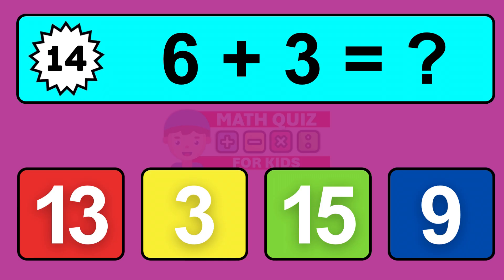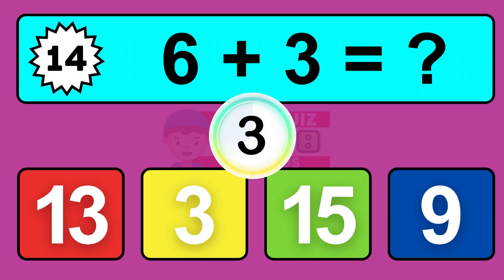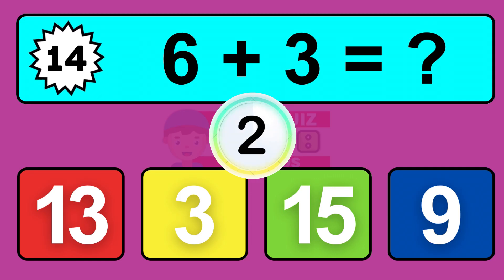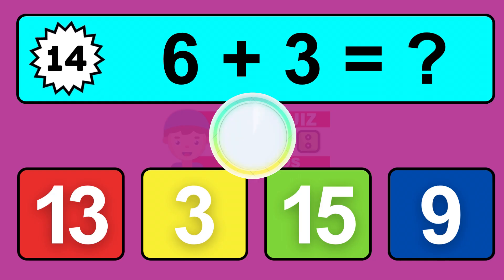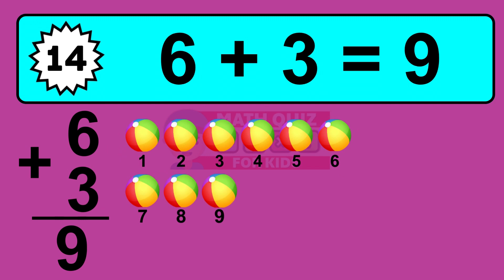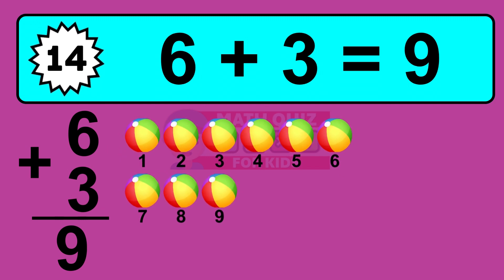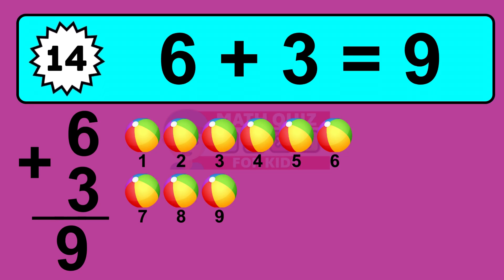Question 14. 6 plus 3 equals what? The answer is 6 plus 3 is 9. Let's count it: 1, 2, 3, 4, 5, 6, 7, 8, 9.